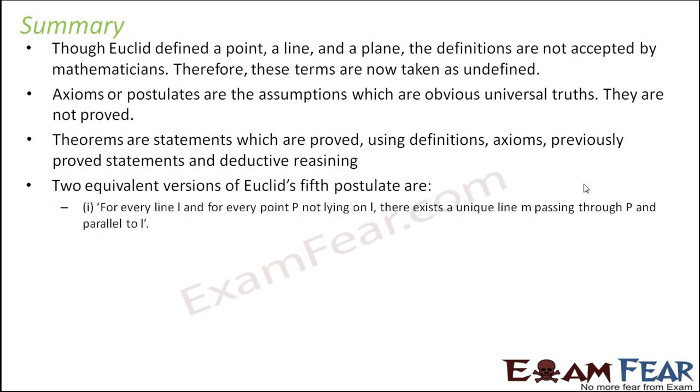The two equivalent versions of Euclid's 5th postulate we have seen. First, for every line L and for every point P not on line L, there exists a unique line M passing through point P and parallel to L. This is the Playfair postulate. The easier one: if there are two distinct intersecting lines, they cannot be parallel to the same line. If there is L and M intersecting, L can be parallel to L' but M will not be parallel to L'.